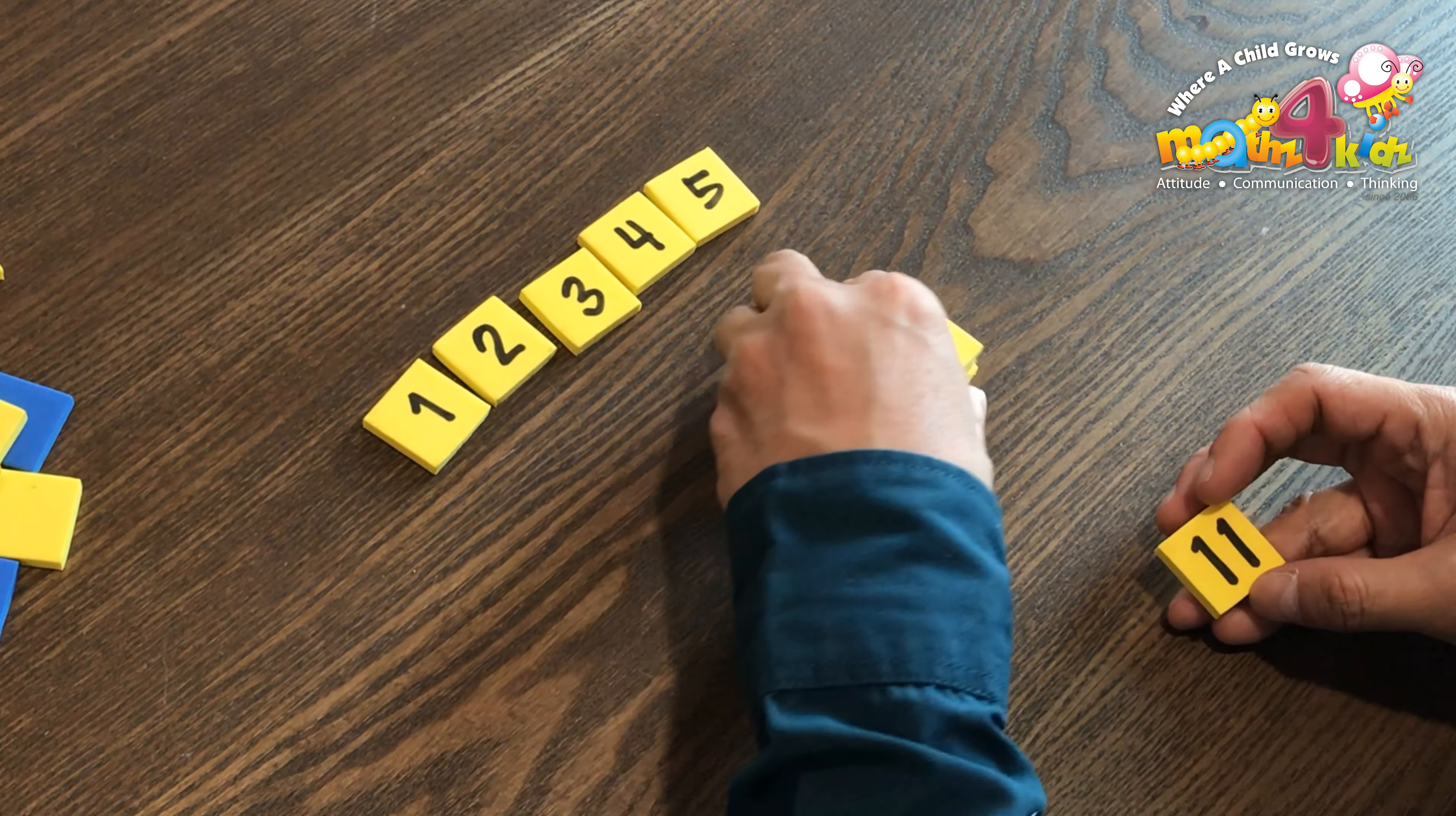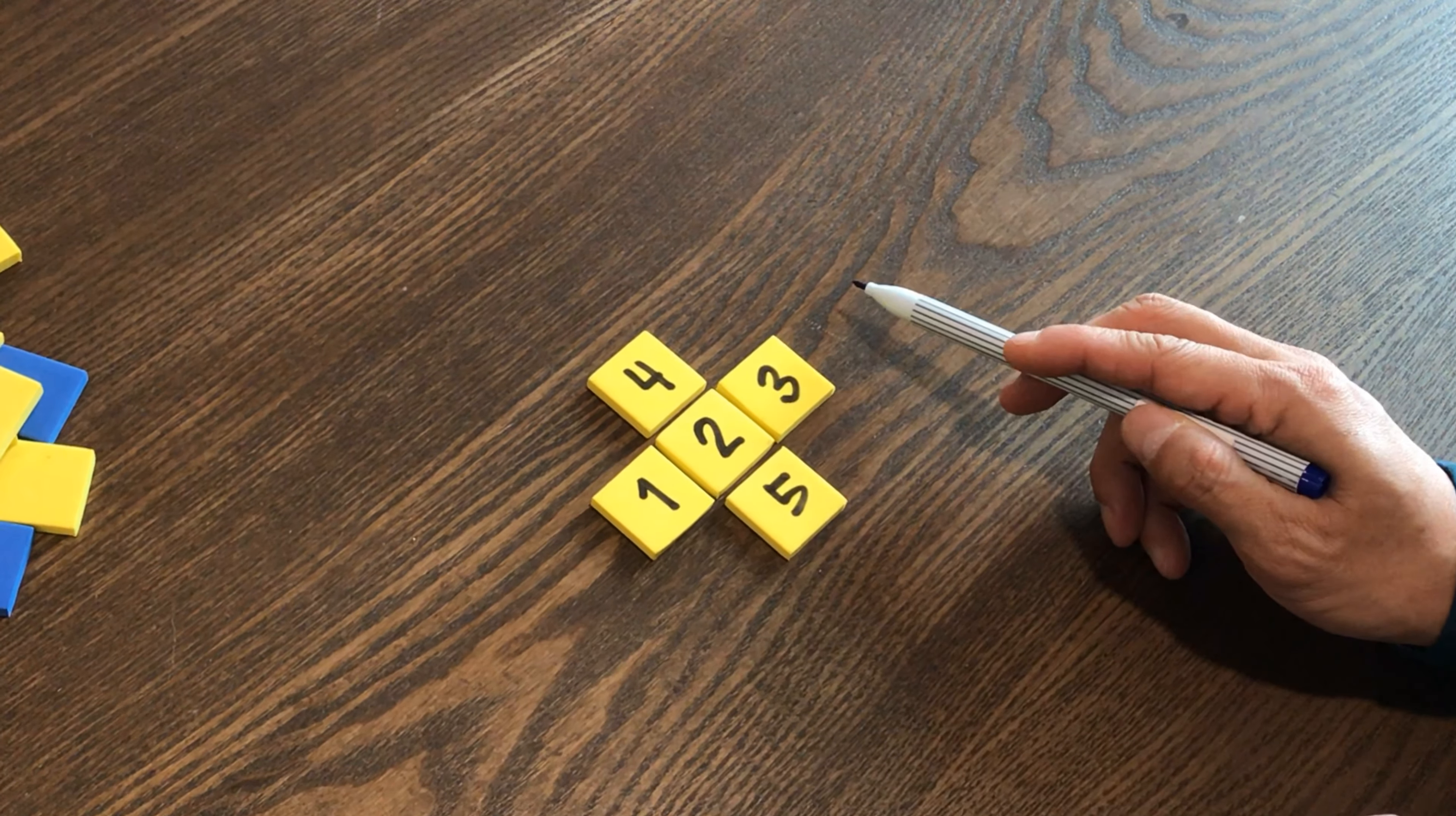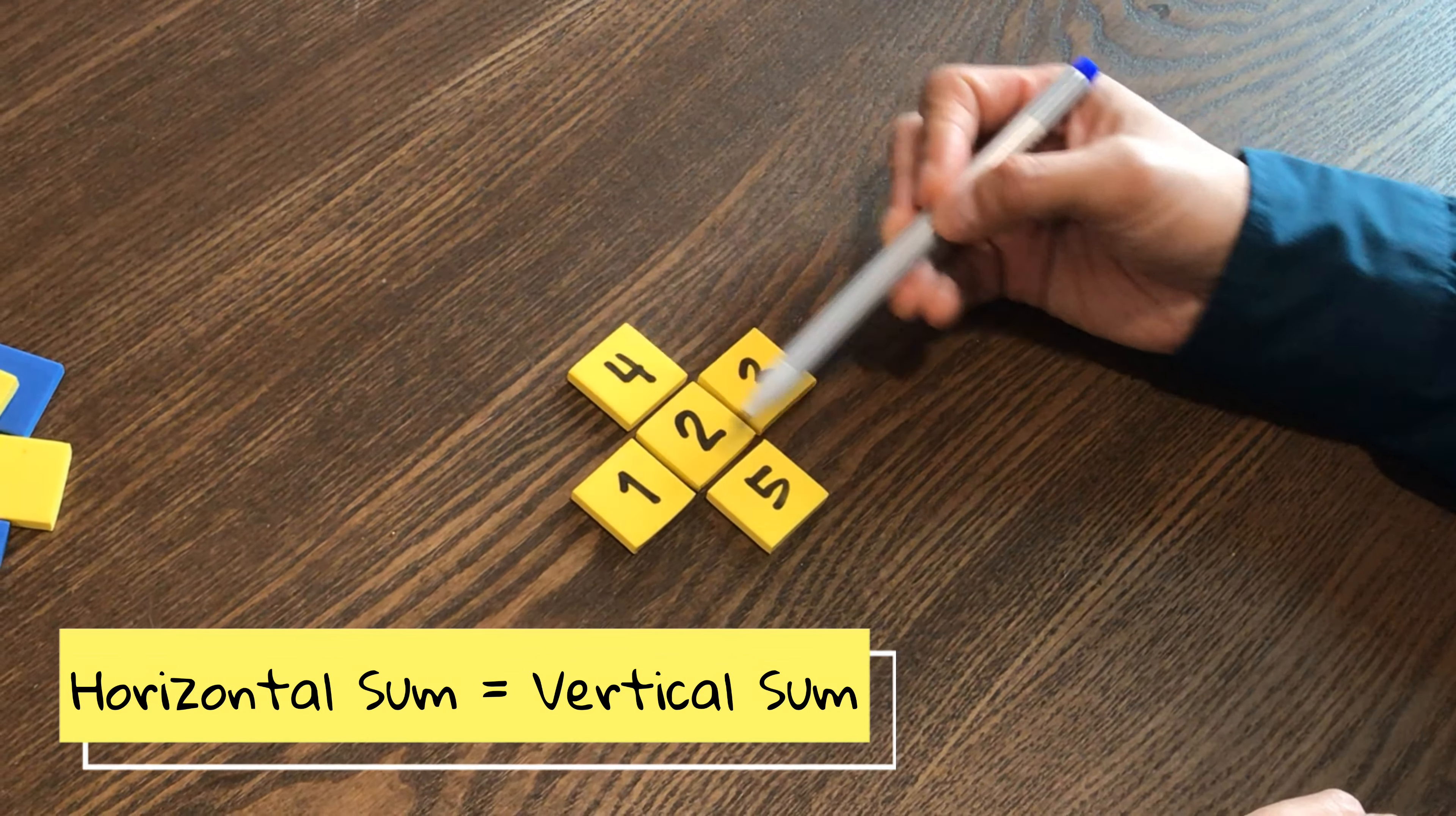And what we want to do is to arrange the 5 numbers in an arrangement that looks like this, so that the total of these 3 numbers, we call that the horizontal sum, is equal to the total of those 3 numbers. We call that the vertical sum. How can we arrange 5 consecutive whole numbers so that the horizontal sum is equal to the vertical sum?